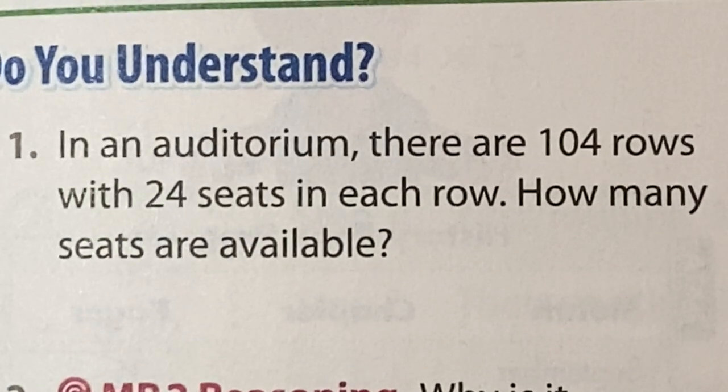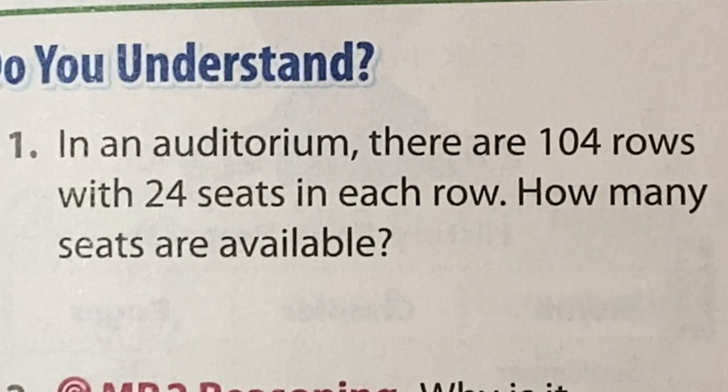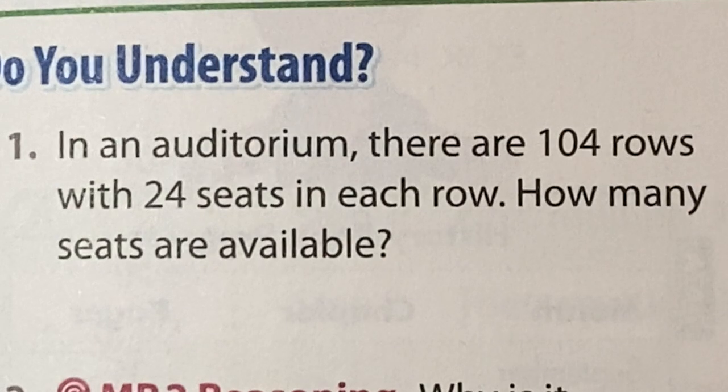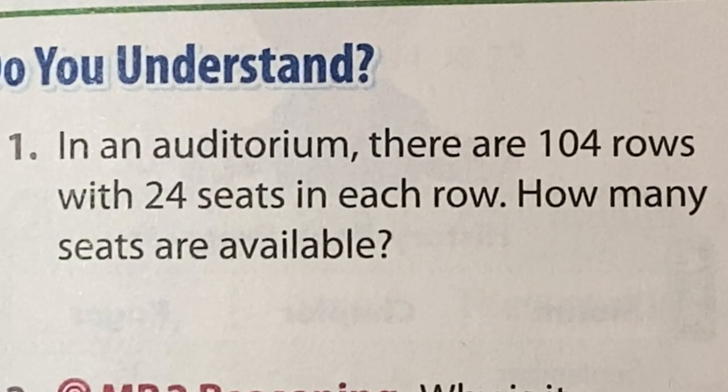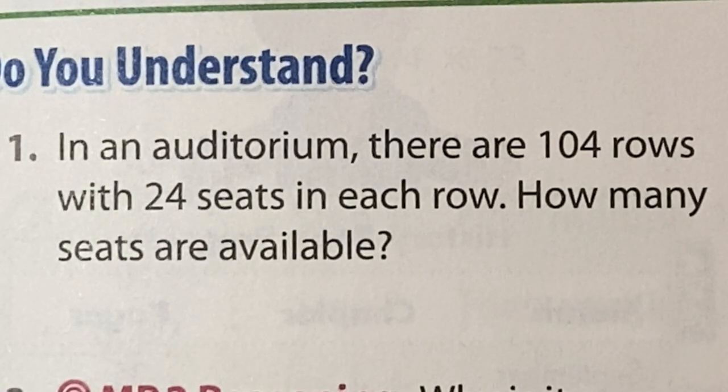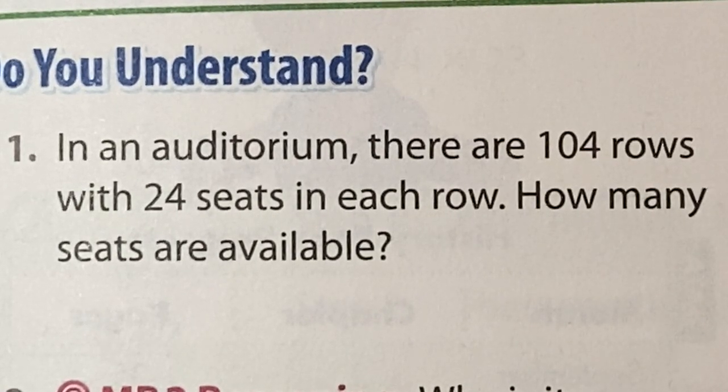Hello, Mr. Dre back with another video. In this one we're going to take a look at multiplying a three-digit number by a two-digit number, but with a zero in one of the numbers that we're multiplying. Sometimes people call this multiplying across a zero.